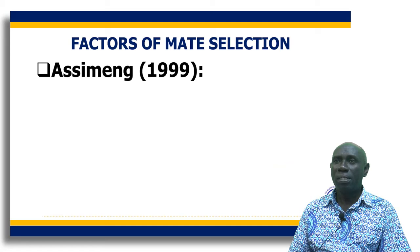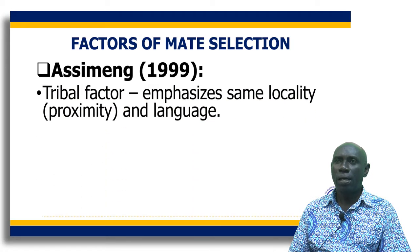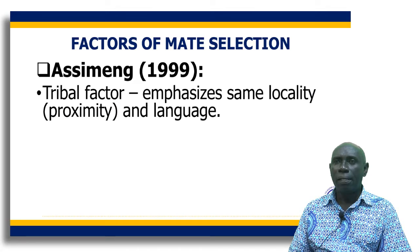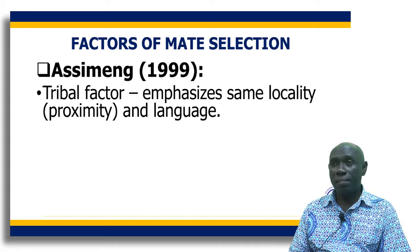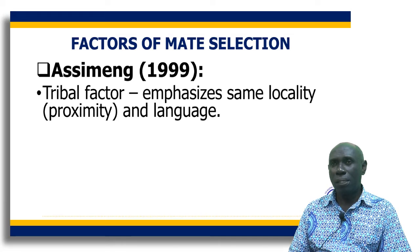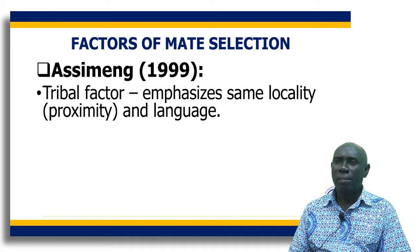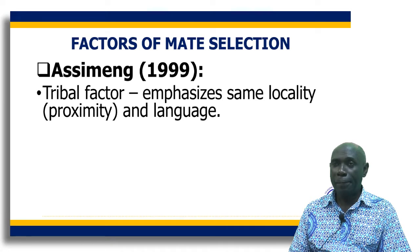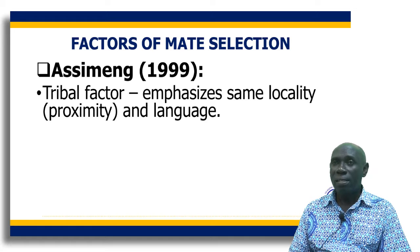Looking at the factors of mate selection, Professor Asimeng, in his book Social Structure of Ghana, brings to bear the tribal factor. The tribal factor is very important to traditional people. Here they look for issues concerning proximity — that is, whether the partner of the daughter or son comes from their locality or is somebody who speaks their language. When they ask where the person comes from, they are asking whether that person really is from their tribe.